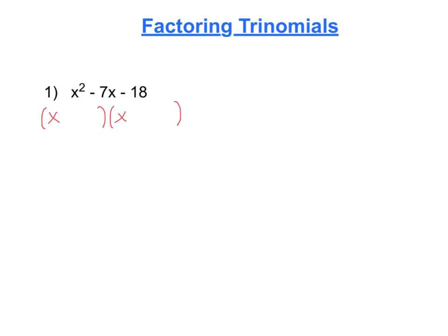To determine what goes in the second spot in each parenthesis, find two numbers that multiply to the last term, so it multiplies to negative 18, and don't forget that negative sign, and it's going to add to negative 7. So you may have to do a little trial and error in your head, but you should come up with a negative 9 and a positive 2. So that's it. It's factored.